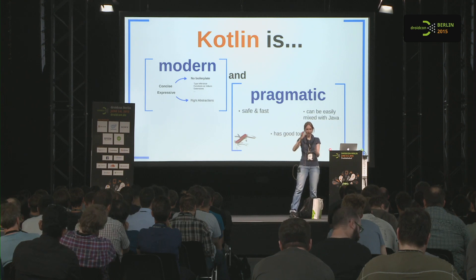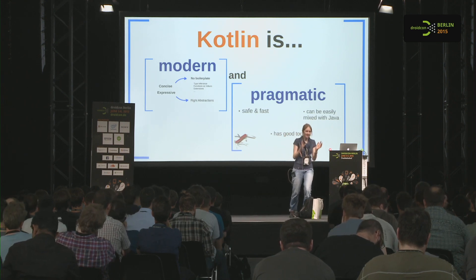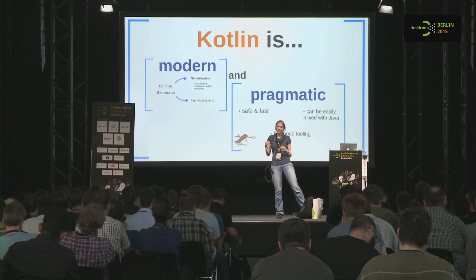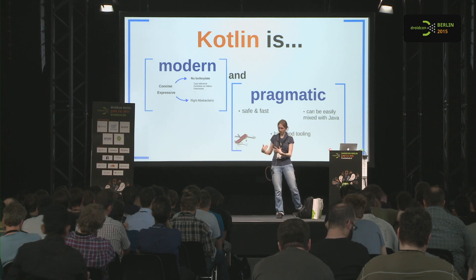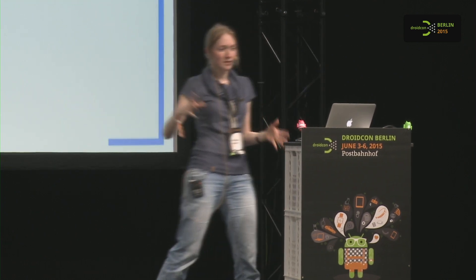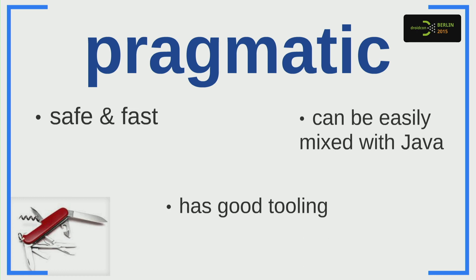On the other hand, Kotlin is also a pragmatic language. It is safe and fast — we are really performance-oriented and want our code to run as fast as possible. This safety and performance means we need a statically typed language. That's really important for Android because of the performance constraints on small devices — you can't be happy with dynamically typed languages because you will lose performance.